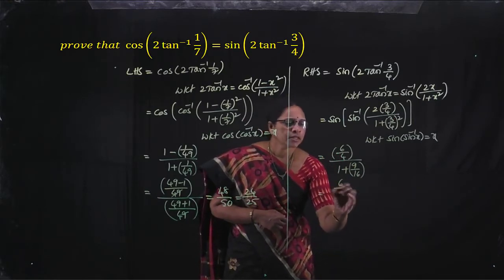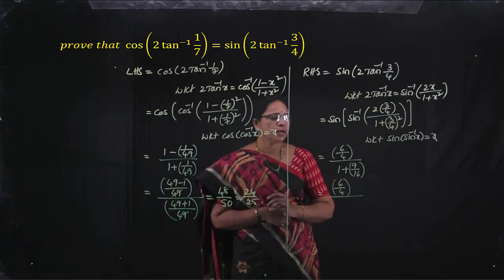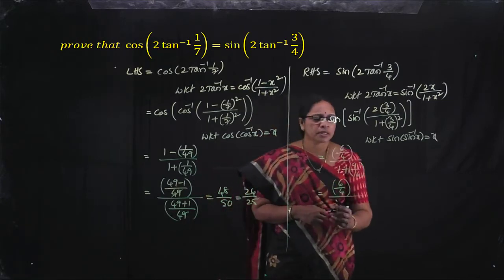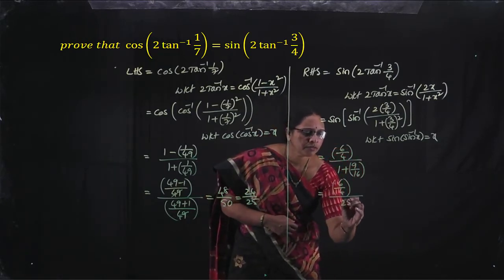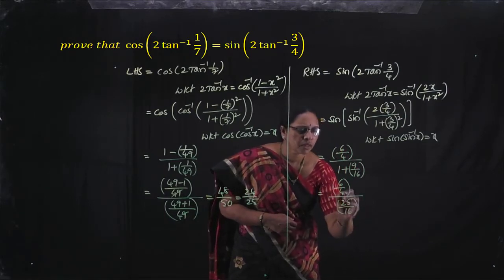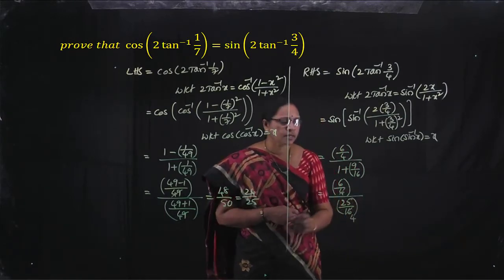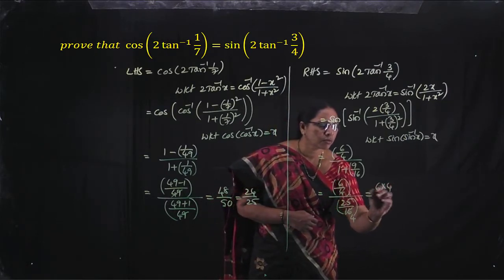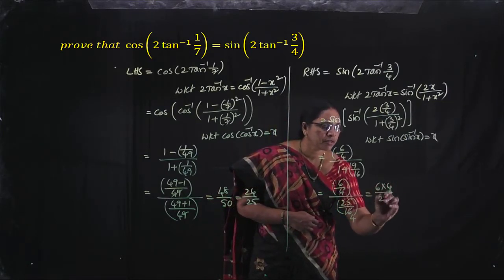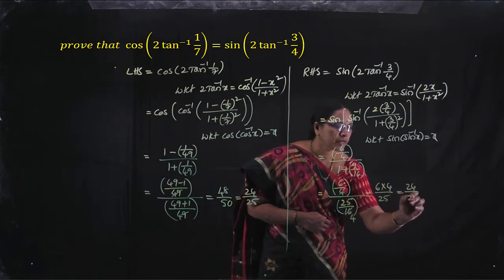Numerator is 6 by 4. In the denominator, take LCM to obtain 25 by 16. The 4s cancel, giving 6 into 4 by 25, which equals 24 by 25.